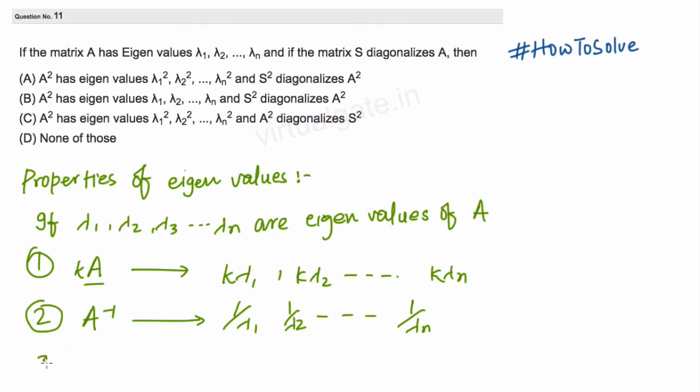Similarly, the third property is: if we find the eigenvalues for A to the power k, then the eigenvalues will also be to the power k. That will be λ₁^k, λ₂^k, and so on, λₙ^k. Now, using this third property, our problem will be solved.